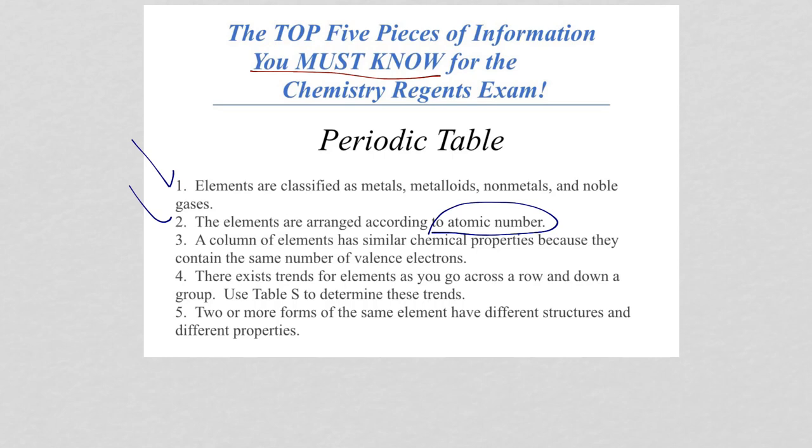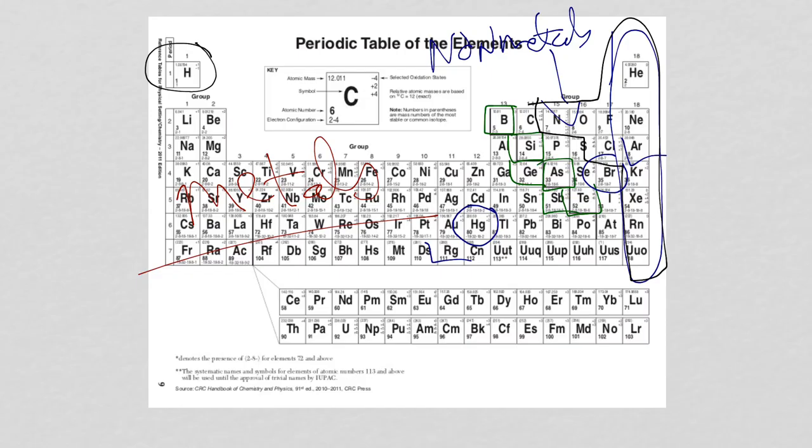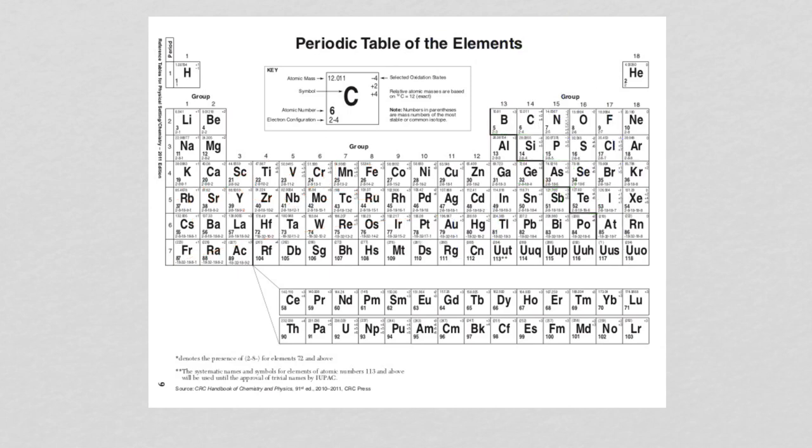Number three, a column of elements have similar chemical properties because they contain the same number of valence electrons. So if we go back to our periodic table and let us erase all of the ink.